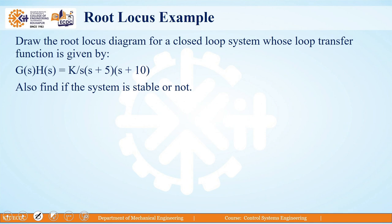Here we will take one example. We are considering an open loop transfer function given as G(s)·H(s) = K divided by s(s+5)(s+10). For this system we have to draw the root locus diagram. We have been asked to find out whether the system is stable or not. According to the steps we will proceed and find out how we are going to draw the root locus plot of the given example.